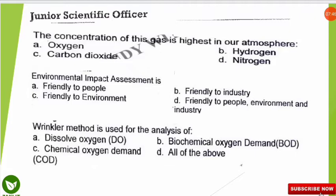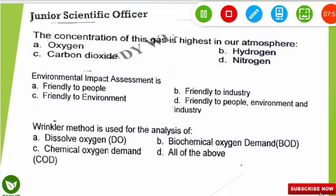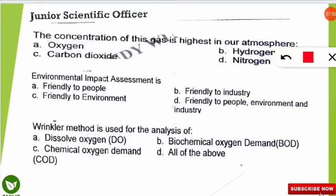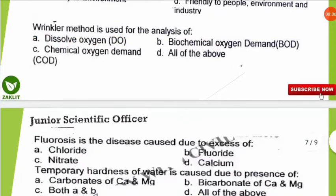The next question is from environmental chemistry: the Winkler method is used for the analysis of which of the following? The correct option is A — it is used for determining dissolved oxygen content in water.